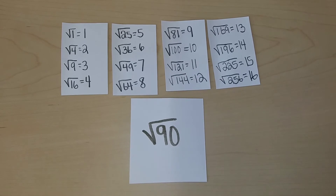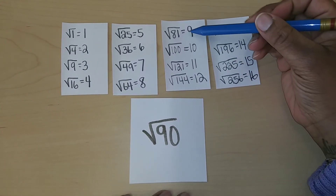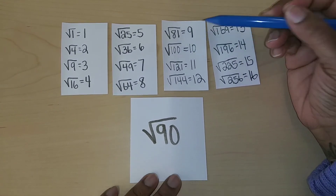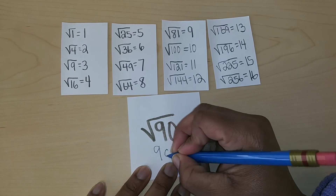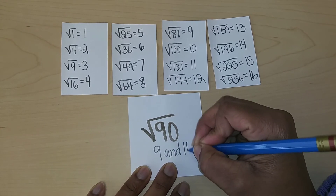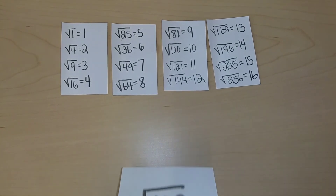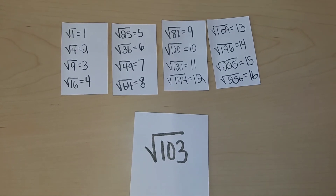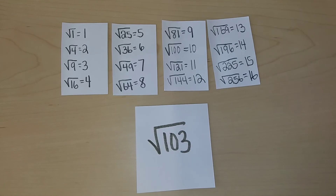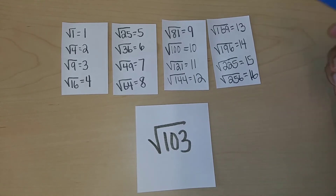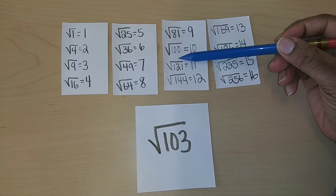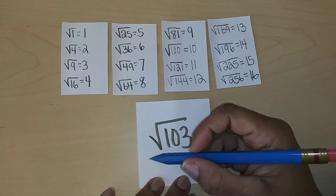Between which two whole numbers would the square root of 90 lie? It will fall between 9 and 10. Almost finished. What about the square root of 103 — the square root of 103 will fall between which two whole numbers? 10 and 11.